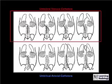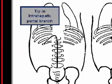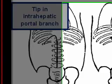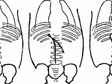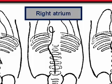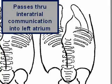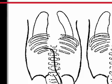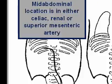Here are some examples of malpositioning of umbilical arterial or umbilical venous catheters. The top four diagrams show umbilical venous catheters not in correct position: one has its tip in an intrahepatic branch of the portal vein; another has its tip in the superior mesenteric vein; another is coiled in the right atrium; and another extends through the intra-atrial septum into the left atrium. This umbilical arterial catheter is in the celiac, renal, or superior mesenteric artery.